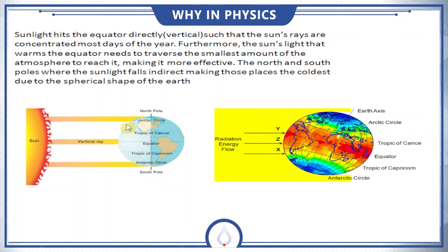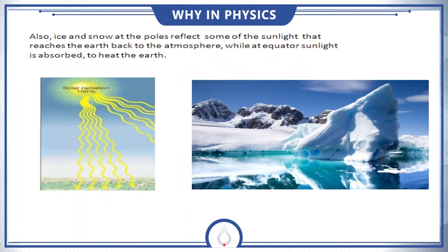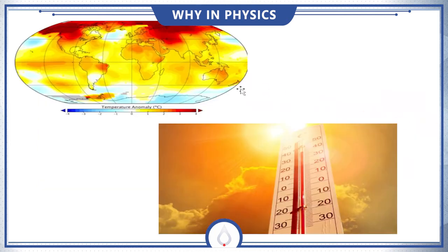The poles are the coldest places on earth. Also, the ice and snow at the poles reflect the sunlight back into the atmosphere, while at the equator sunlight is absorbed to heat the earth. That's why the temperature at the equator is higher than the poles.